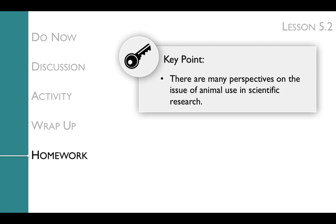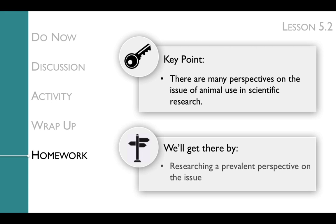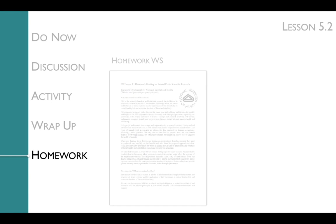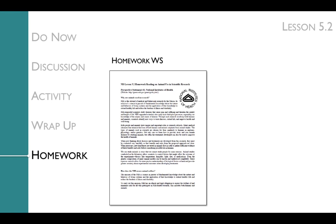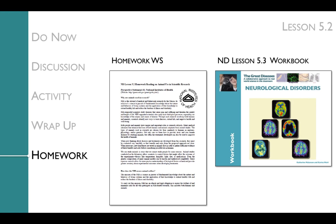The key point of the homework is that there are many perspectives on the issue of animal use in scientific research. We'll get to this key point by researching a prevalent perspective on the issue. To prepare for lesson 5.3, in which the students will complete a structured academic controversy on the issue of animal use in scientific research, students will research one of the prevalent perspectives on the issue. This research could be completed using the prepared homework readings or readings in the workbook for lesson 5.3, or by giving students the homework worksheet with questions and letting them find the information on the organization's websites.